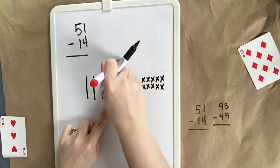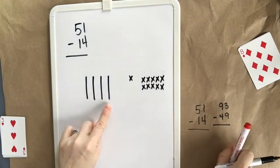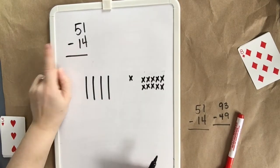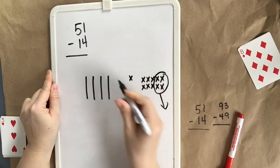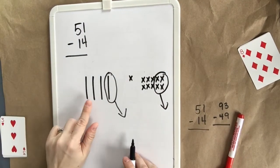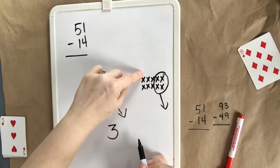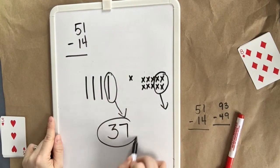There we go. 10, 20, 30, 40, 51. Now I need to take away my 4 and take away my 10. That's 14. I've got 30, 7. The same number that I had before.